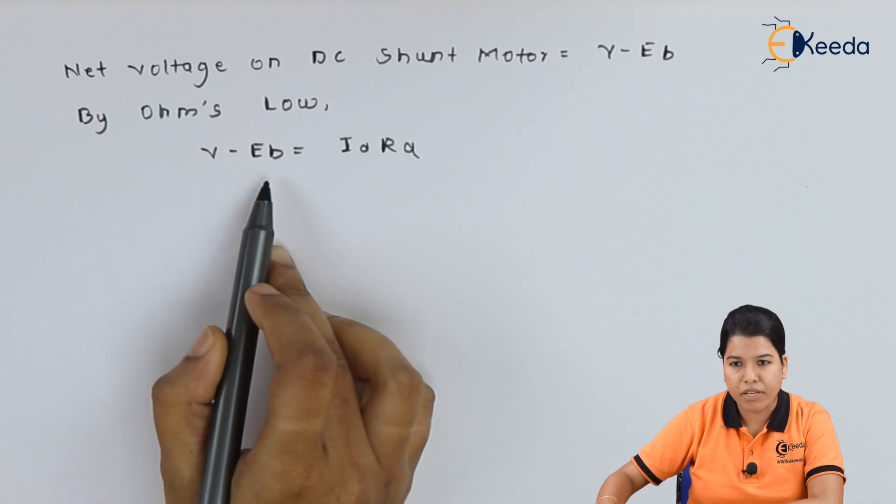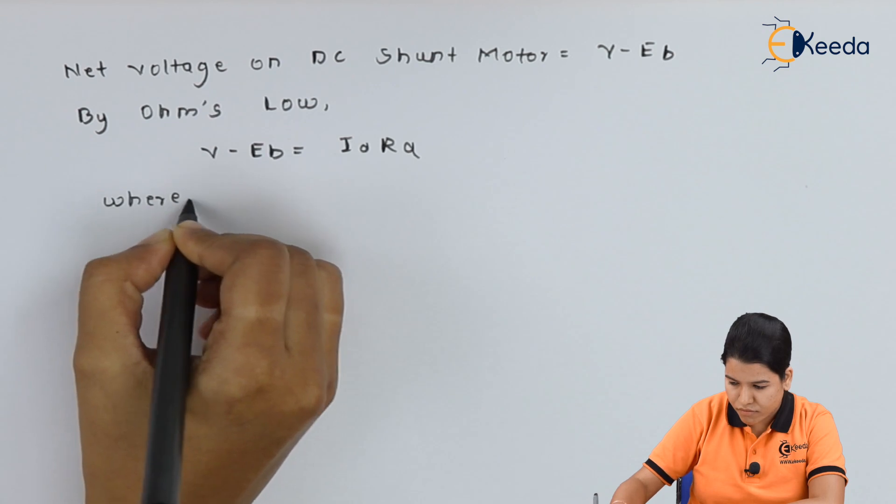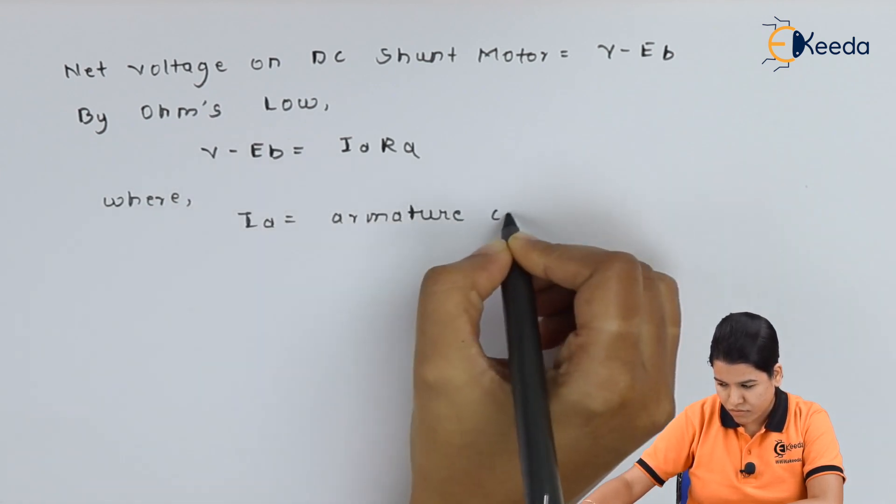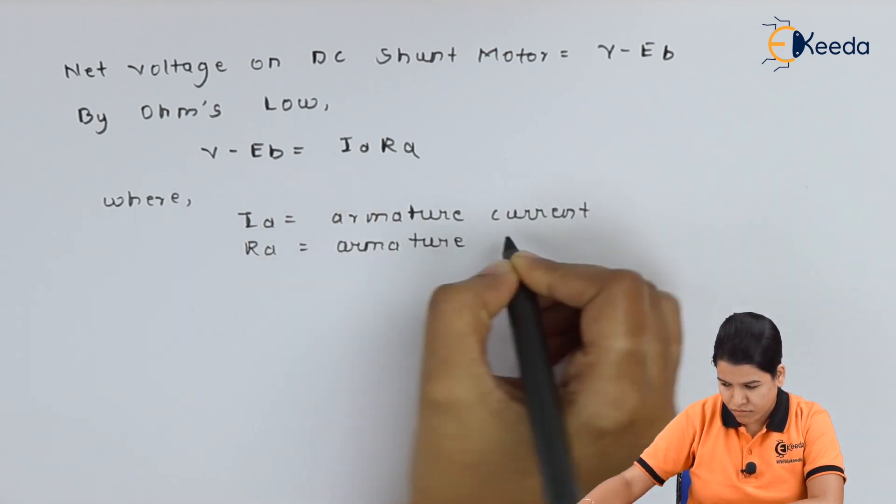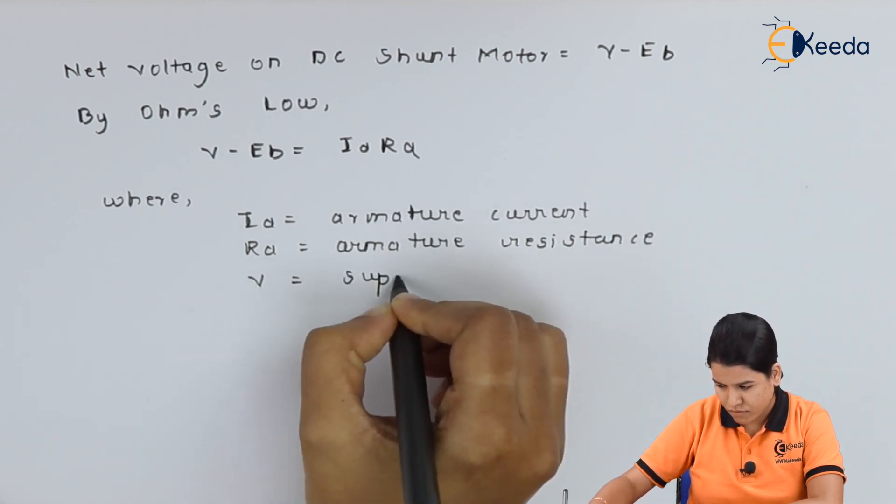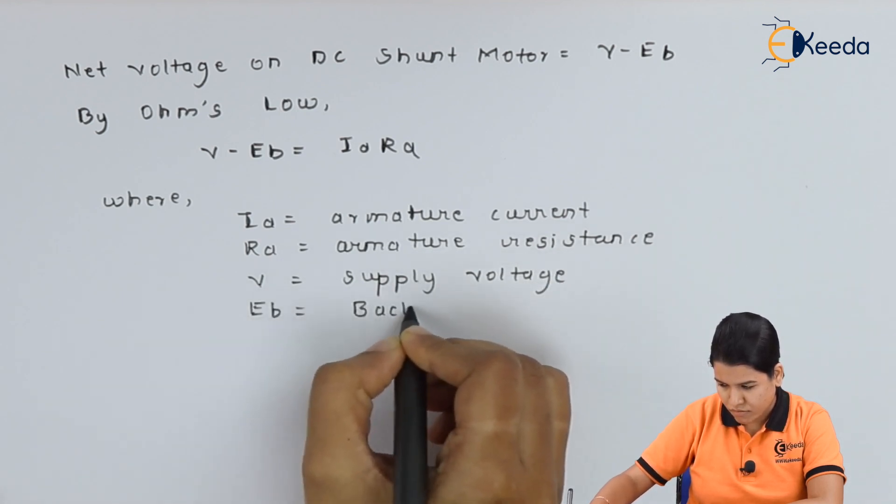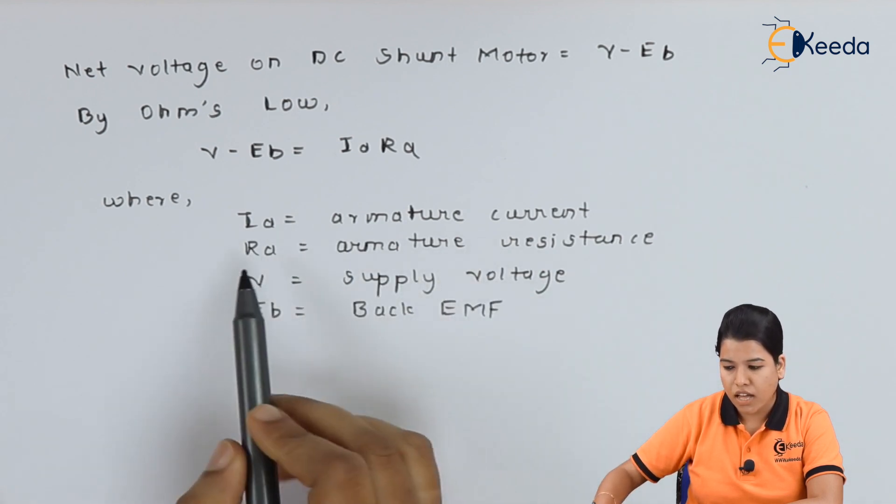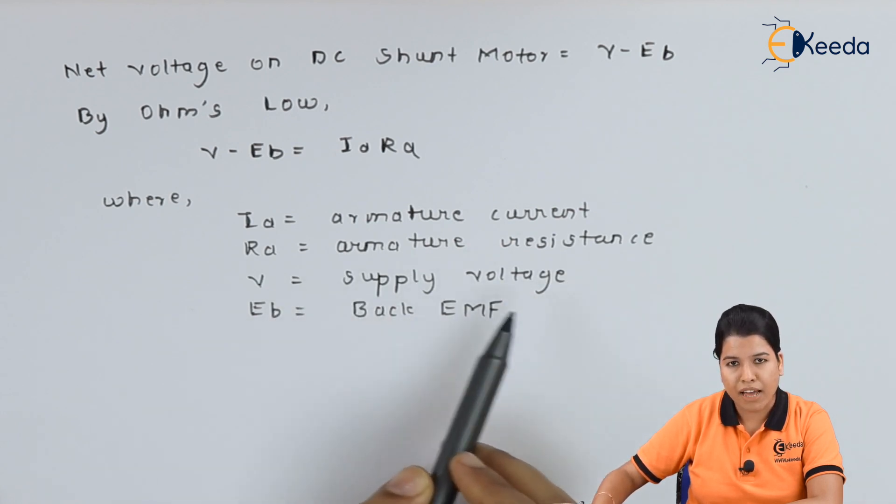V minus Eb is equal to Ia Ra, where Ia is equal to armature current, Ra is equal to armature resistance, V is equal to supply voltage, and Eb is equal to back EMF.